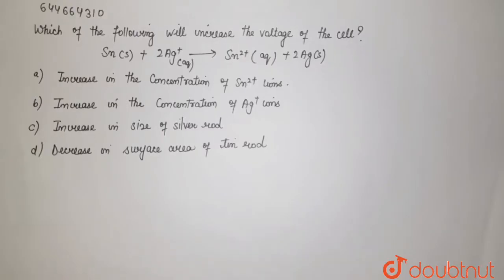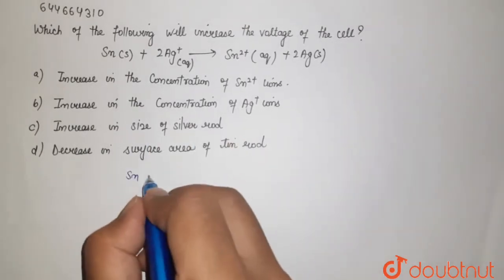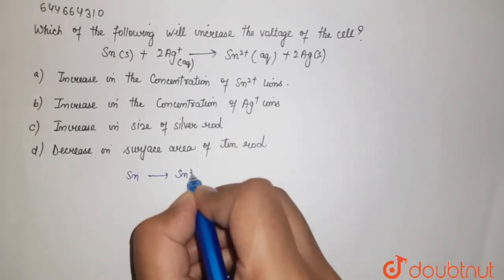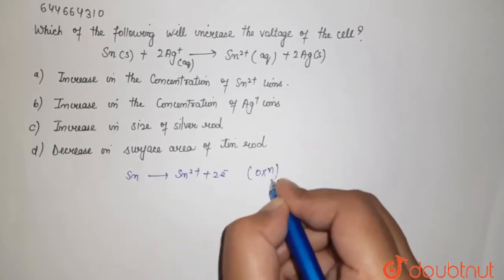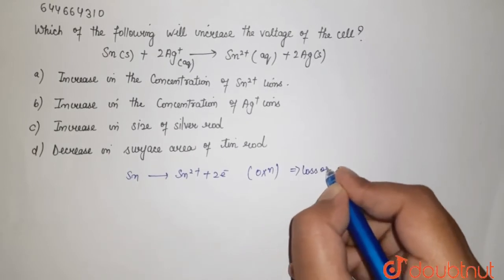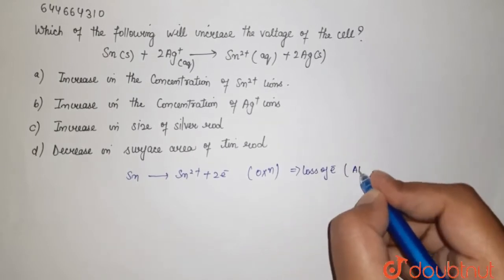So here we are given one cell that is Sn. It liberates two electrons and goes through oxidation process over here. Oxidation means there is loss of electrons and this happens on your anode compartment.